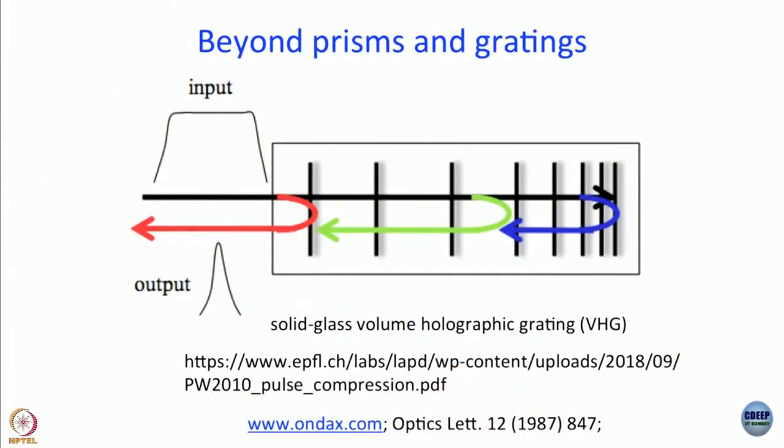In fact, whatever technology we have is moving towards miniaturization. I think the latest development in this field is something called VHG - Solid Glass Volume Holographic Grating. You remember we talked about the Bragg mirror, right - Bragg mirror where reflection is from different layers. Here also, what you have is this is a very small device. There is this company called Ondax, which has now been taken over by Coherent. The principle was known long ago, demonstrated in 1987 Optics Letters paper. Now this company has developed it and marketed it as a product.